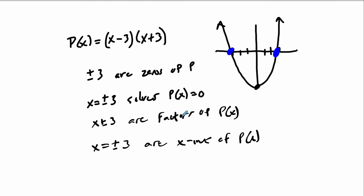The whole idea is that with polynomial functions we're talking about what they look like visually. The zeros are clearly important because they represent turning points in the graph between positive and negative values. This relates to the intermediate value theorem.